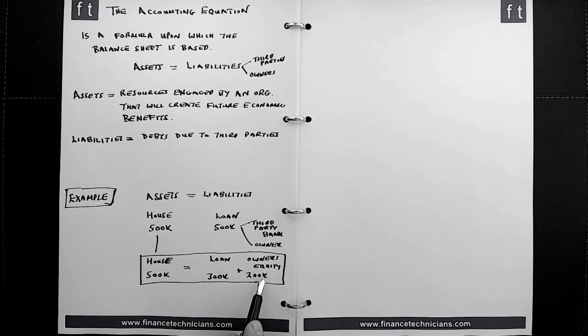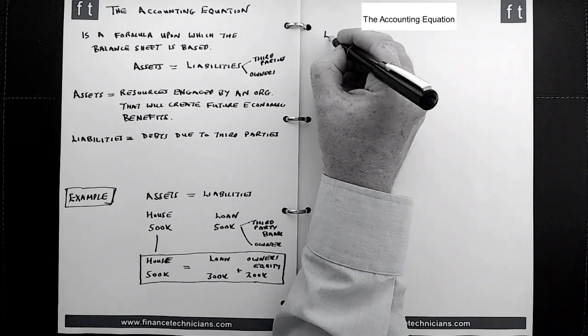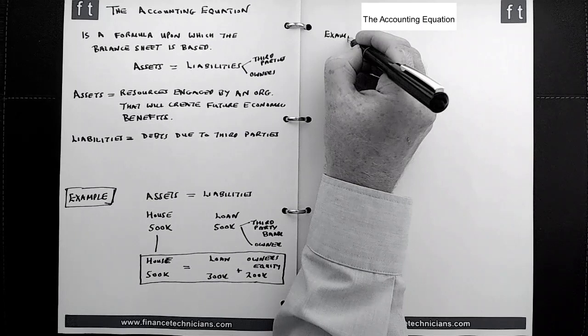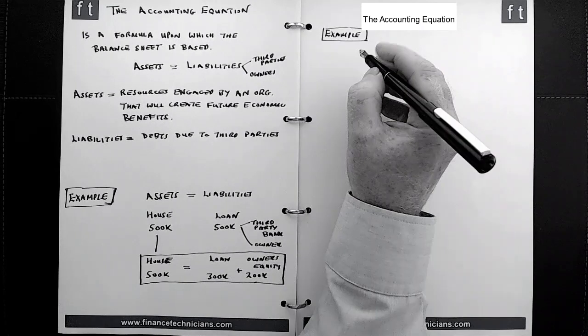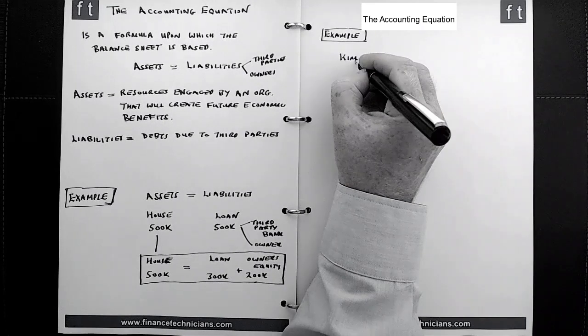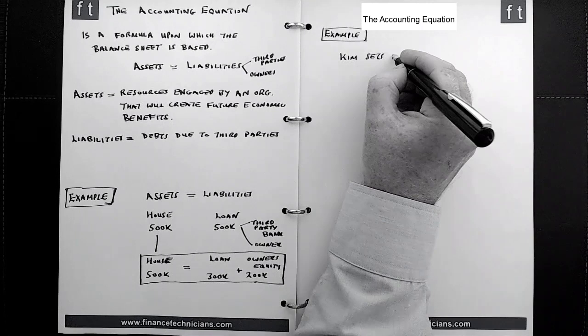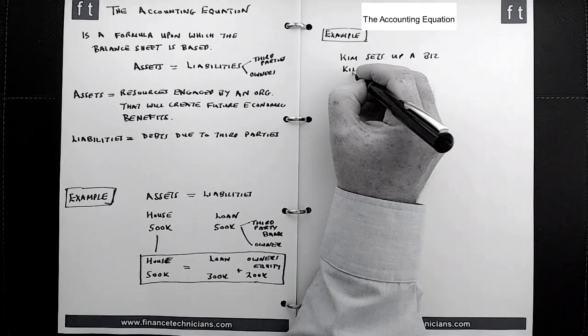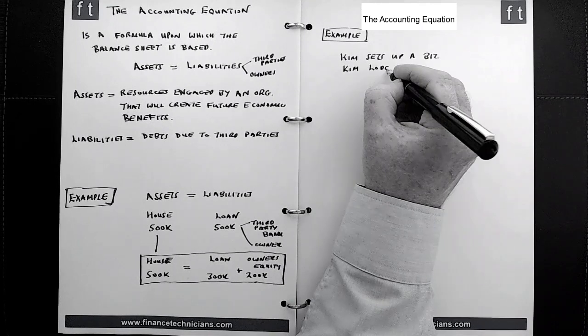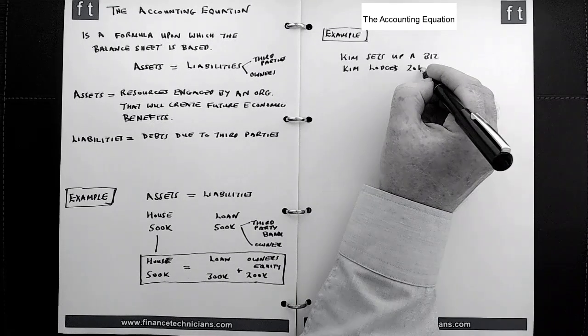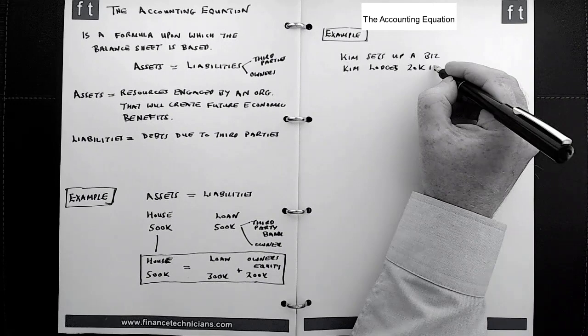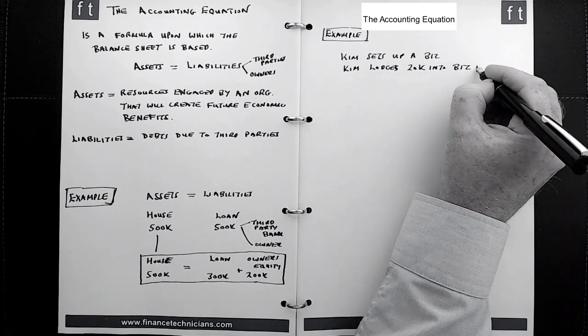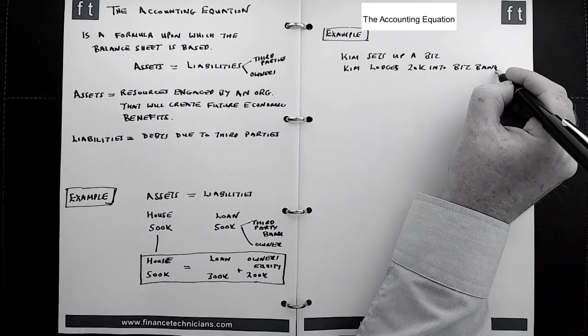That's one simple example, but now we need to look at another example in a business context. Again, we're going to keep it relatively straightforward here. We look at an example whereby an individual called Kim sets up a business, and as part of this, Kim decides to lodge money into a bank account. So Kim, let's say, lodges 20,000, 20k, into the business bank account.